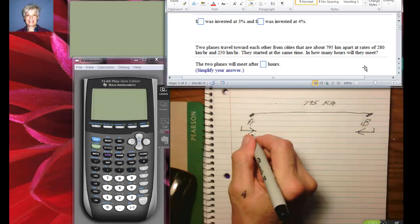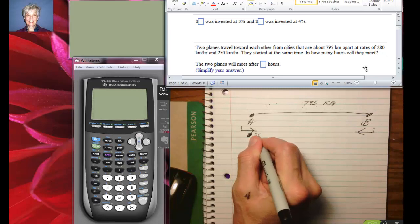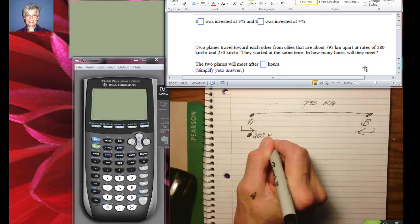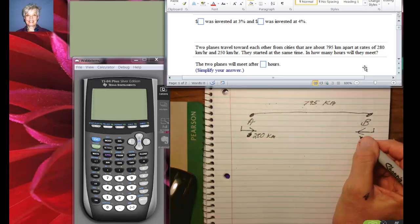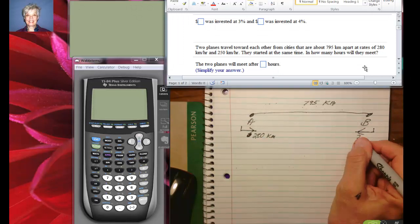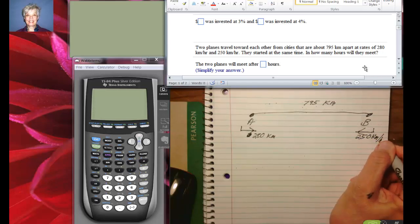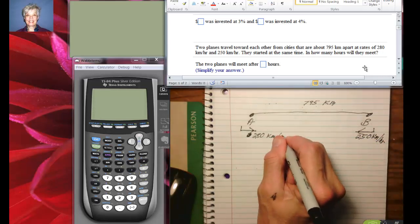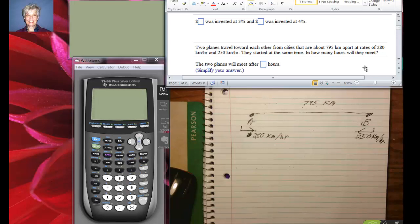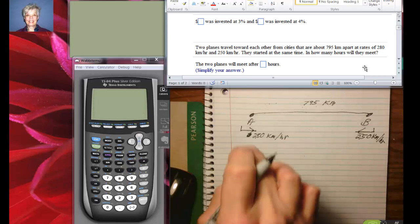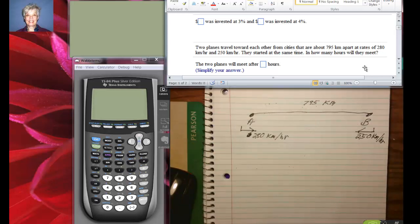Well, I'm just going to pick this because it's first. It's not dollars, it's 280 kilometers per hour, and this is traveling 250 kilometers per hour. Oops, should have said per hour and per hour. All right, now that's important, right? Because this plane is going to go a greater distance than this plane.